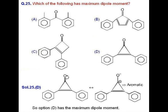Question number 25, this is a good question on aromaticity and the answer is D. In option D, the central three-member ring, if it shows resonance, will become aromatic and the two phenyl rings are also giving plus R effect to it. So its dipole moment will be maximum.